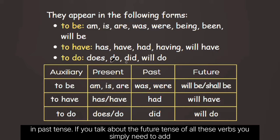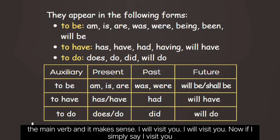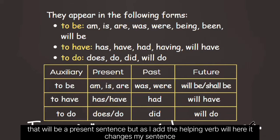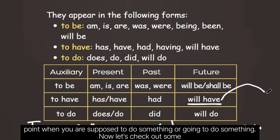If you talk about the future tense of all these verbs, you simply need to add 'will' before them. In future tense, the main verb doesn't change — we only add 'will' or 'shall' before the main verb. For example: 'I will visit you.' If I simply say 'I visit you', that will be a present sentence. But as I add the helping verb 'will', it changes my sentence from present to future. Another example: 'I will have submitted my work before Saturday' — talking about something you are supposed to do before a future point.